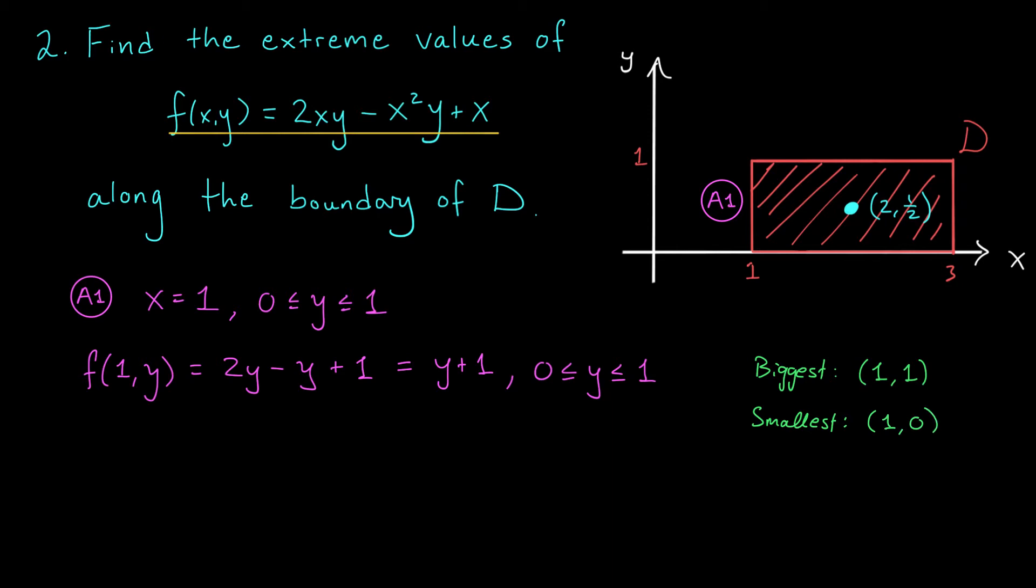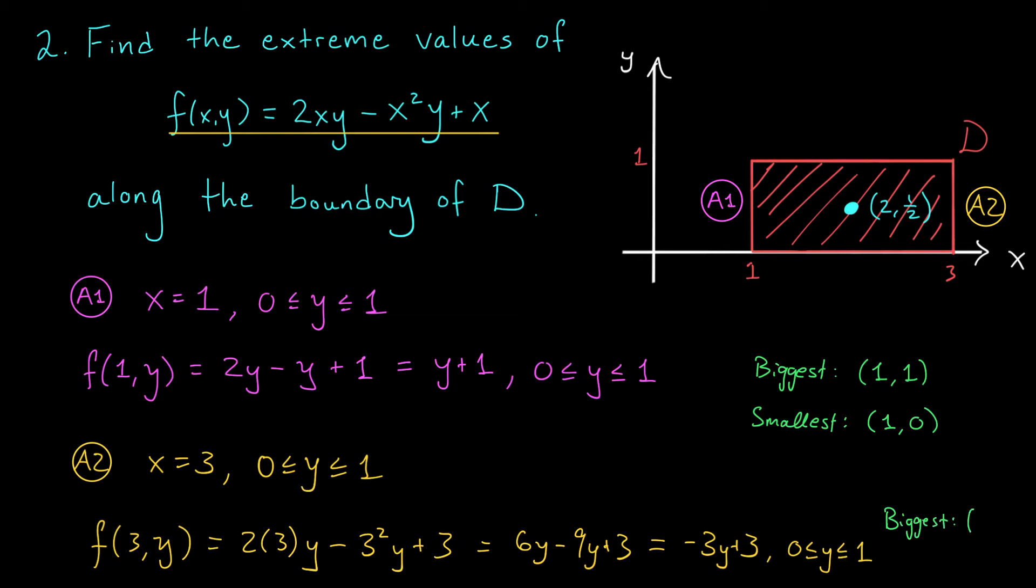All right, that's one line down, 3 to go. We'll now look at our second vertical line segment, which maybe I'll call A2. The equation of A2 is x = 3. But again, we're restricting our attention to just this portion of the line, where y is between 0 and 1. What does our function look like along that line segment? Well, we would get the equation 2(3)y - 3²y + 3. If I clean this up, I get 6y - 9y + 3, or equivalently -3y + 3, where once again, y is allowed to range between 0 and 1. Again, we ask ourselves, how large can this function be and how small can it be? Well, since we have a negative 3 here, the function is going to be largest when y is as small as possible. So it will be biggest when y is 0, and we get the extreme point (3,0). It's going to be smallest when y is as big as possible, in this case, when y is 1. So we get the extreme point (3,1).